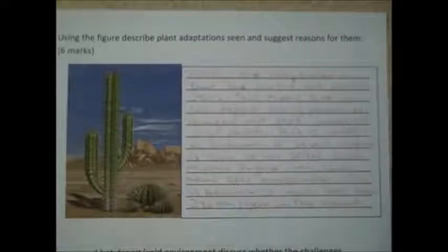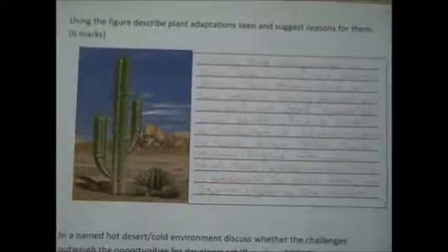A second adaptation is that it has spikes. These reduce surface area, which means less transpiration. This is because it rains less than 250 millimetres a year, so it's really dry. It needs to reduce water loss, and it does this by having spikes which reduce the surface area.